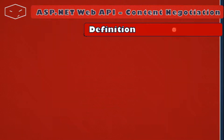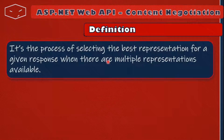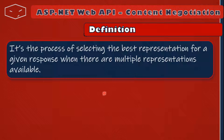So what is content negotiation? Content negotiation is the process of selecting the best representation for a given response, when there are multiple representations available. For example, a server can return XML, JSON or binary, but it must select just one — the best representation to give you a response.